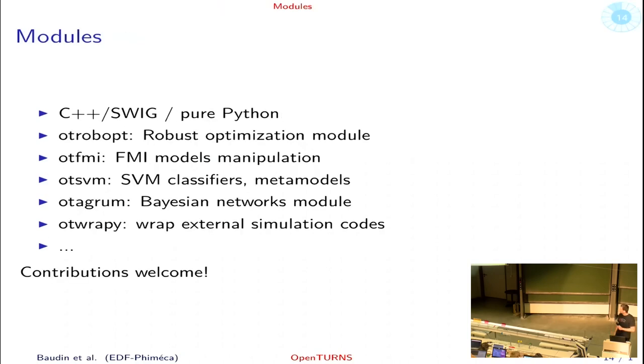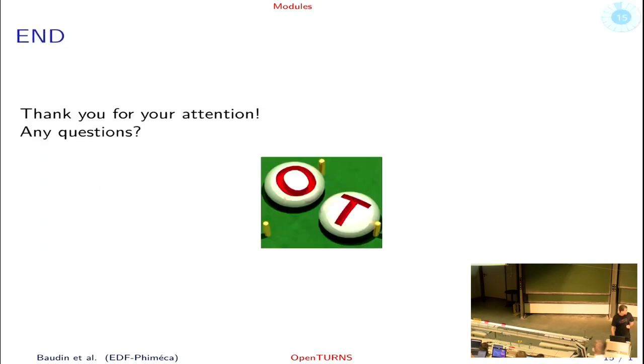We have also modules that are built on top of OpenTURNS and extend the functionalities. Some of them are C++ and there's also pure Python ones because it's easier to contribute. We have, for example, stochastic optimization modules, model evaluation, SVM, FFTs, Bayesian networks, etc. And that's all for us. Thank you.